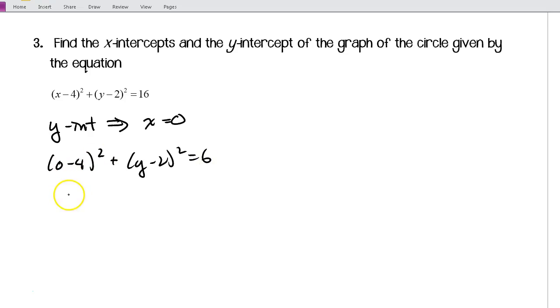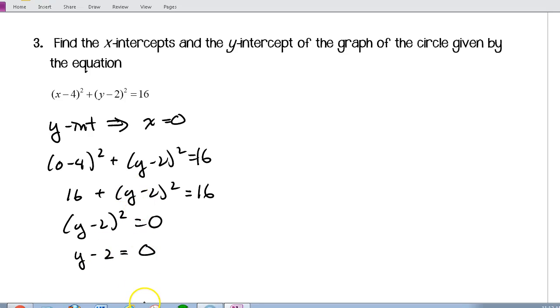So, this gives me (-4)² is 16 plus (y - 2)² is equal to 16. And I'm going to subtract 16 from both sides. So, I get (y - 2)² is equal to 0. And then I'll take the square root of both sides. So, I get y - 2 is equal to 0. Normally, we would do positive or negative, but since we're looking at 0 here, we don't really have to. So, we get y is equal to 2. So, that's our y-intercept.